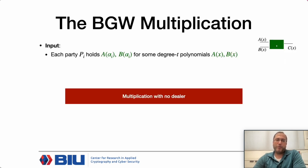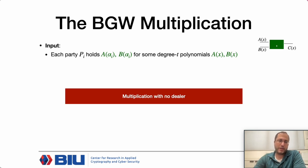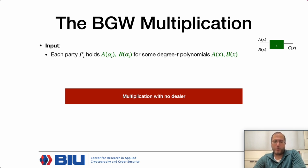Our starting point is the protocol for computing multiplication gates in BGW. The BGW protocol follows the paradigm of secure computation based on secret sharing, in which the parties evaluate a circuit implementing the function they wish to compute, while hiding the value on each wire using a secret sharing scheme. The parties emulate the computation gate by gate, running a secure protocol for each gate's output wire using their shares on the input wires.